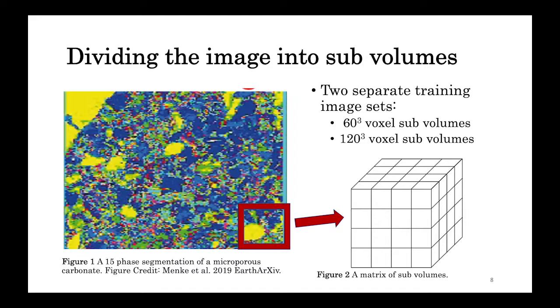Next, we needed some training images. So we took the top 10% of this very large 1200 by 1200 by 6000 voxel image that had been segmented into 15 phases, and we created two separate training datasets. One where we divided the volume into 30,060-cubed voxel subvolumes, and one where we divided the volume into 30,120-cubed voxel subvolumes.